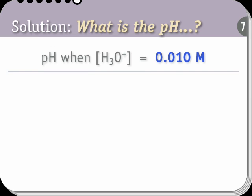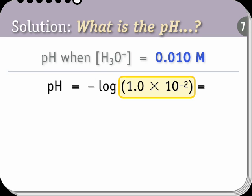Let's find the pH when the hydronium ion concentration is 0.010 moles per liter. First, let's write the concentration in scientific notation. 0.010 is the same as 1.0 times 10 to the minus 2. So the pH is minus the logarithm of 1.0 times 10 to the minus 2.